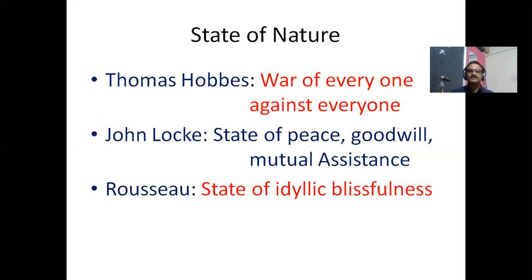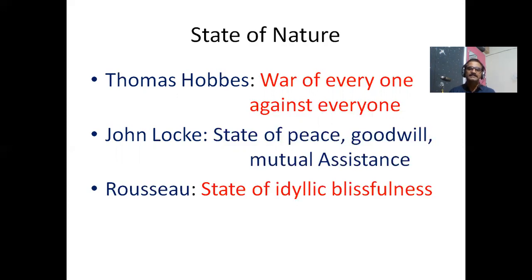What kind of state of nature did they visualize? According to Thomas Hobbes, there was a war of everyone against everyone because of the selfish nature of human beings. Human beings were solitary, nasty, and dangerous, and therefore always acted selfishly. That selfishness resulted in competition, competition led to conflict, and that conflict was the reason for the war-like situation that prevailed during the state of nature.